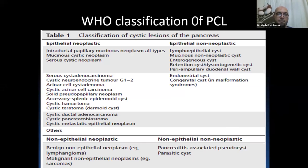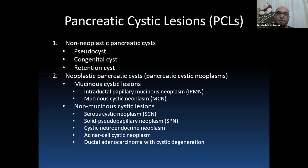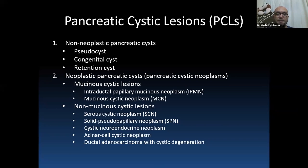There are many cystic lesions in the pancreas. The most common non-neoplastic lesions are pseudocyst, congenital cyst, and retention cyst. The most important neoplastic lesions are mucinous tumors like intraductal papillary mucinous neoplasm (IPMN), mucinous cystic neoplasm, and non-mucinous tumors like serous cystic neoplasm, solid pseudopapillary neoplasm, cystic neuroendocrine neoplasm, acinar cystic neoplasm, and ductal adenocarcinoma with cystic degeneration.